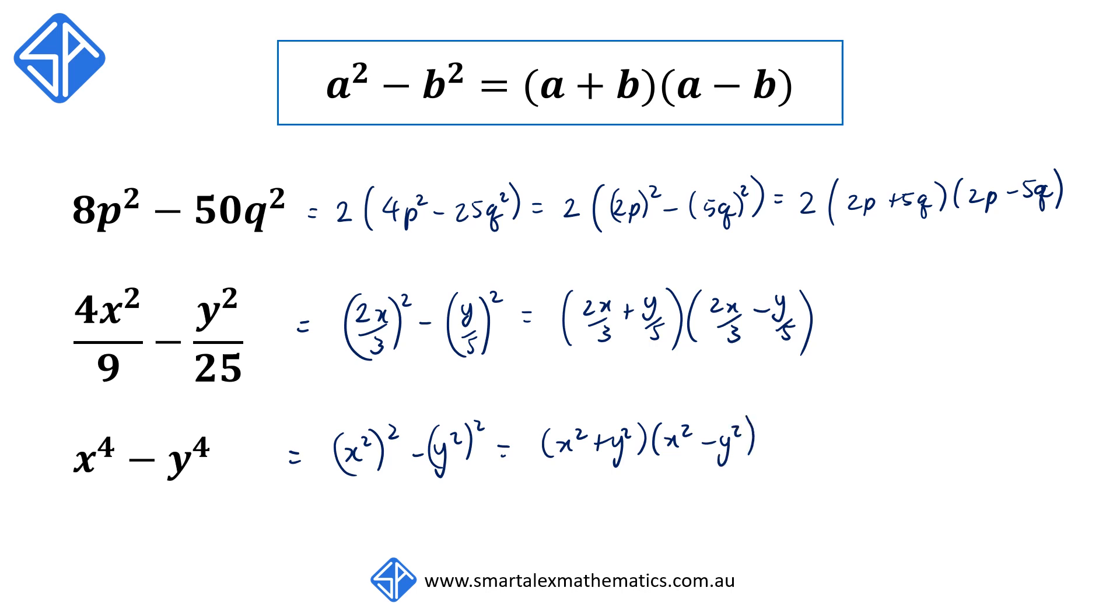Now you'll notice that x² - y² is also a difference of two squares, so we can factorize further, and our final answer becomes (x² + y²)(x + y)(x - y).